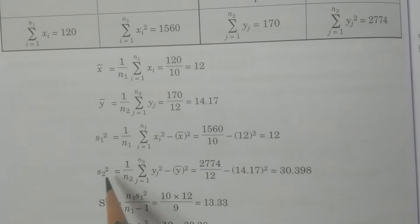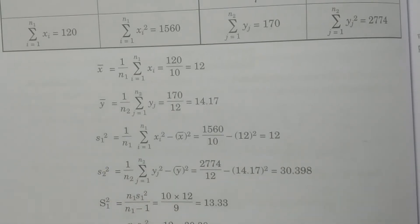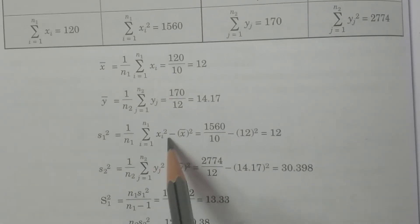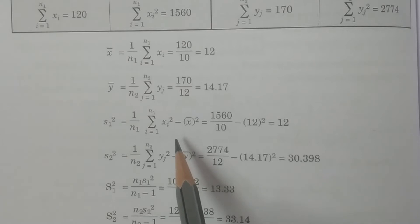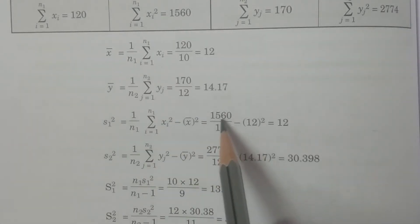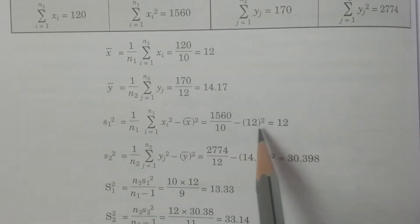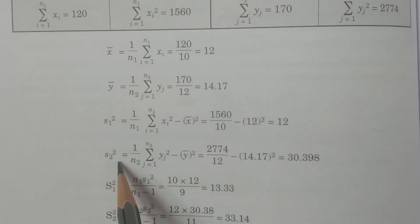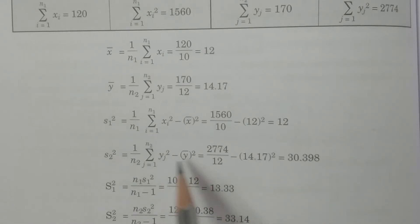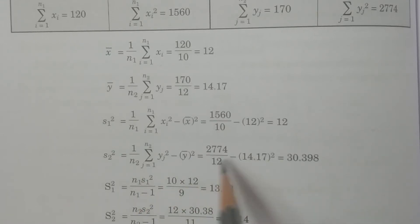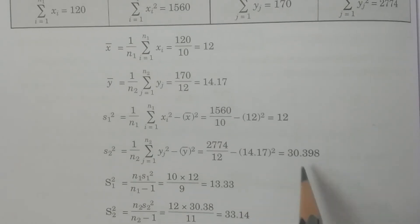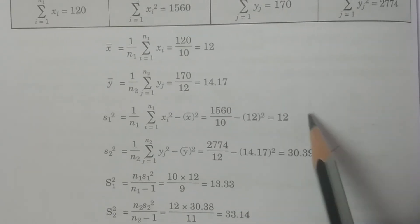Next, calculate the sample variances s1² and s2² using the formula: s1² = (1/n1) × Σxi² − x̄². Substituting: 1560/10 − 12² = 156 − 144 = 12. Similarly, s2² = (1/n2) × Σyj² − ȳ² = 20774/12 − (14.17)² ≈ 30.4. Calculate and verify these values.